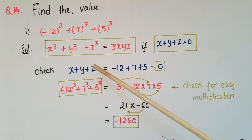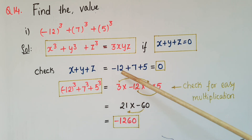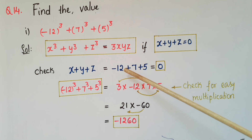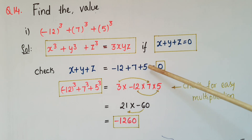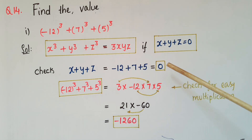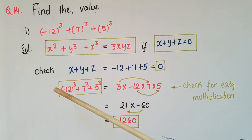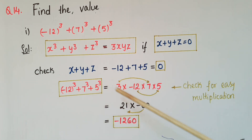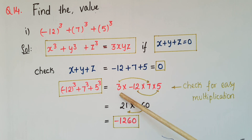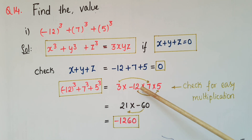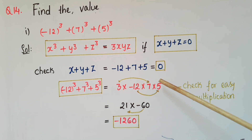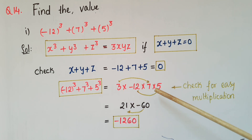Here, x plus y plus z is equal to minus 12 plus 7 plus 5, which equals 0. So x plus y plus z is equal to 0. Therefore, minus 12 whole cube plus 7 cube plus 5 cube is equal to 3xyz, that is 3 into minus 12 into 7 into 5.